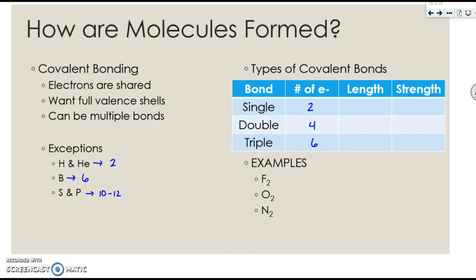If we ranked these in order of length and strength, single bonds would be the longest, double would be in the middle, triple would be the shortest, which should make sense because if there's more electrons, they're going to pull the atoms closer together, making a shorter bond.